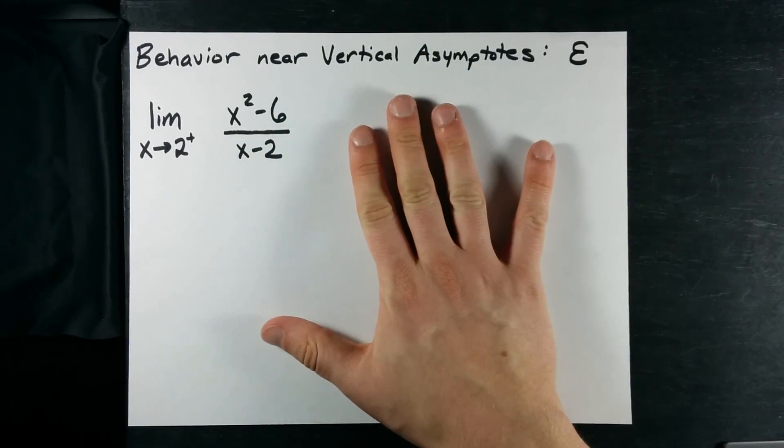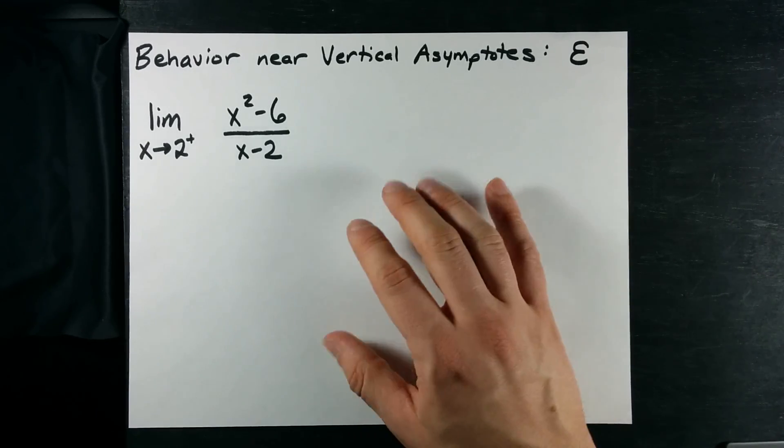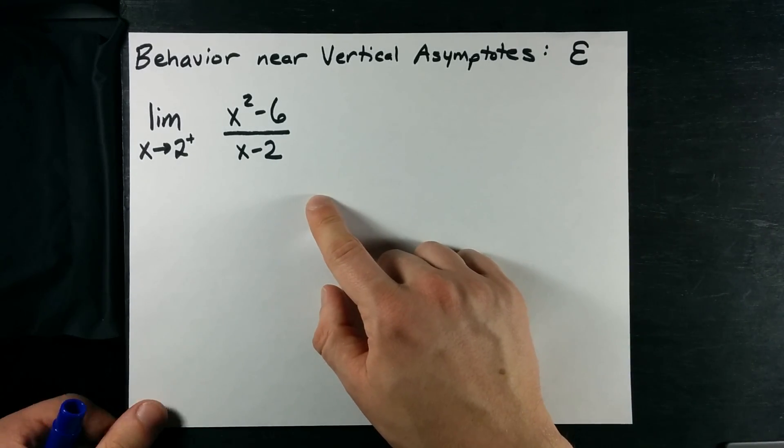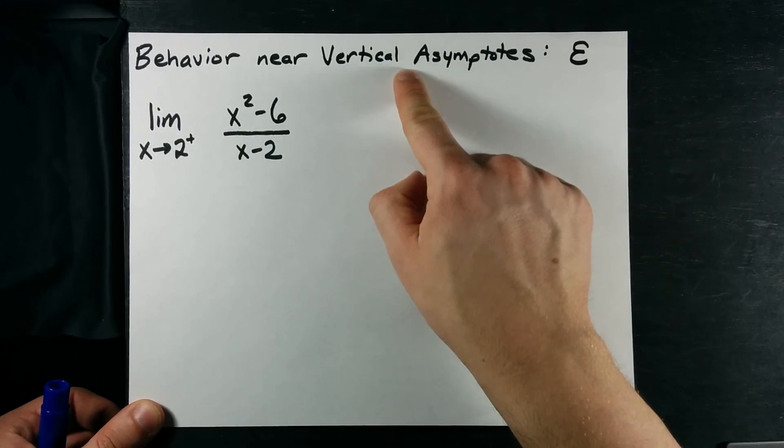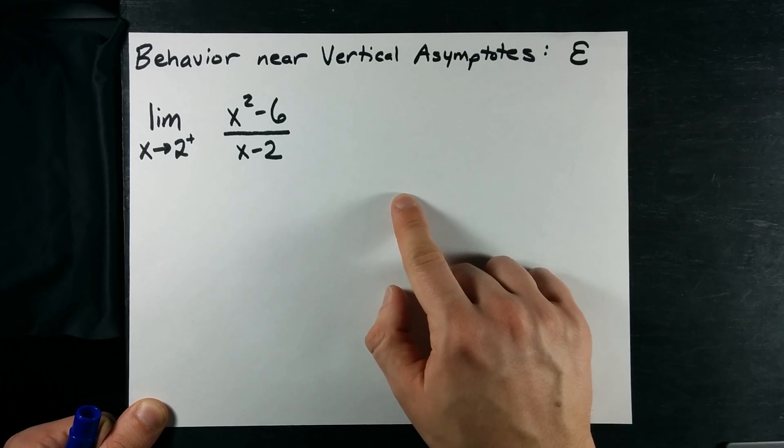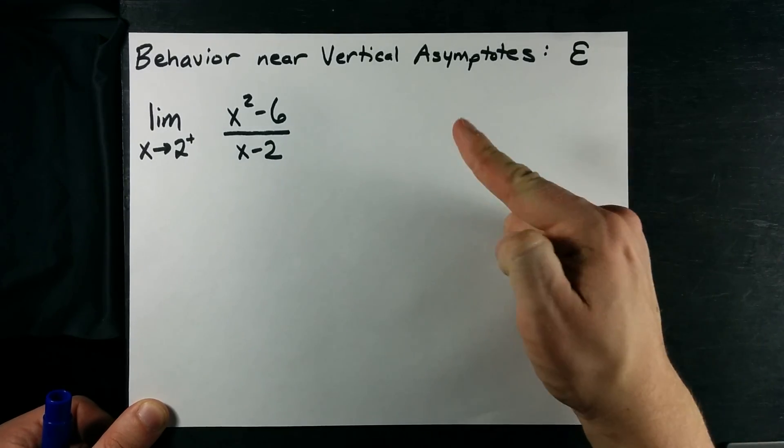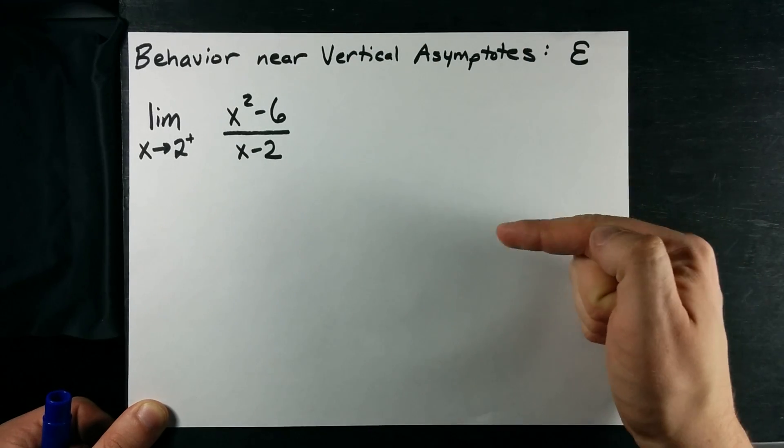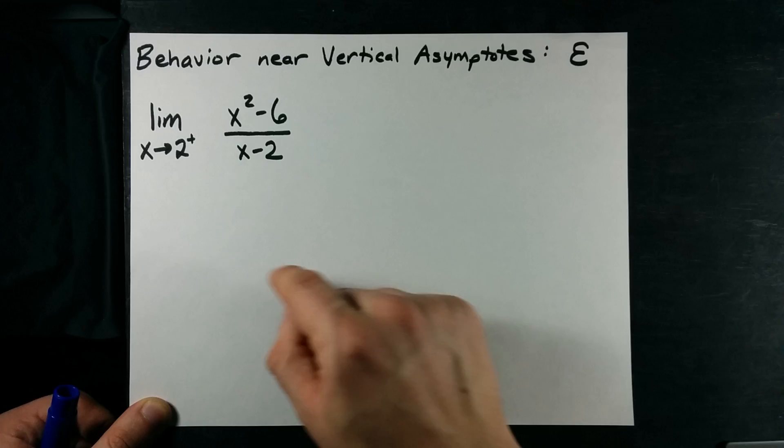Now, when I'm sketching it, it's going to help me to know whether or not the function gets closer to positive infinity as I get closer from the left, or negative infinity as I get closer from the left, and from the right, do I go towards positive infinity or negative infinity as I get closer and closer to that value of 2?